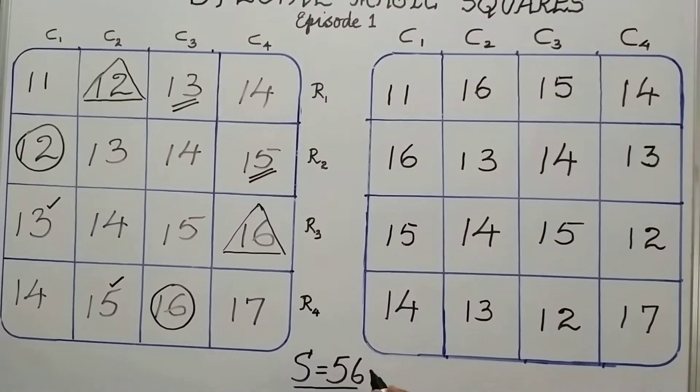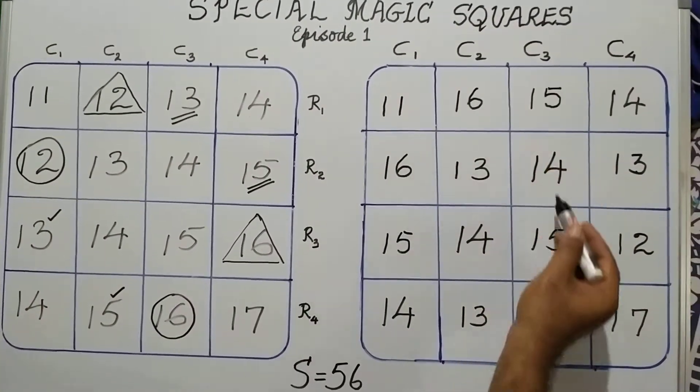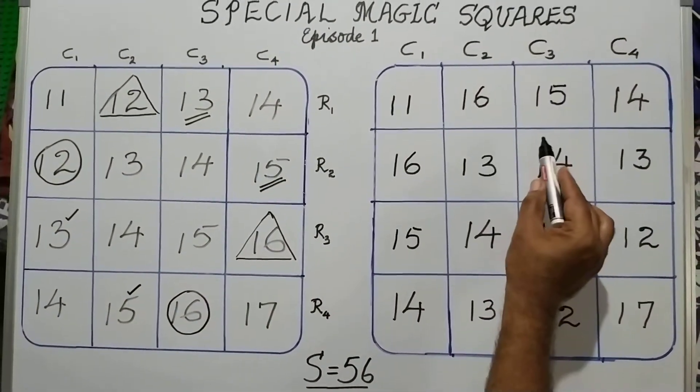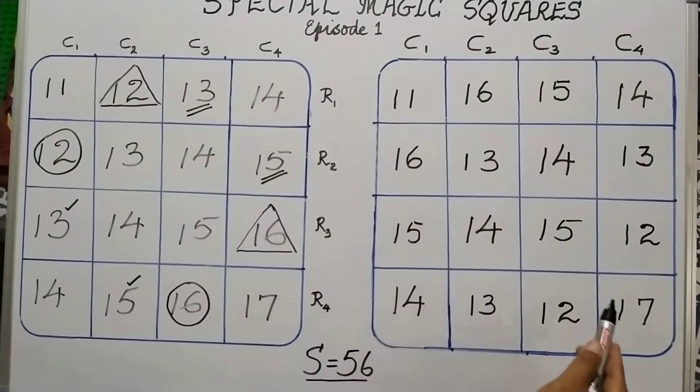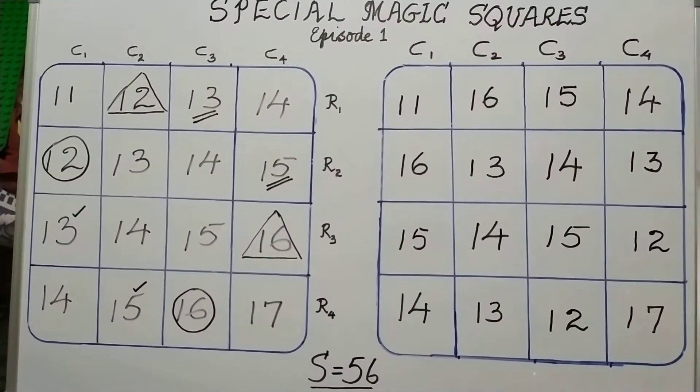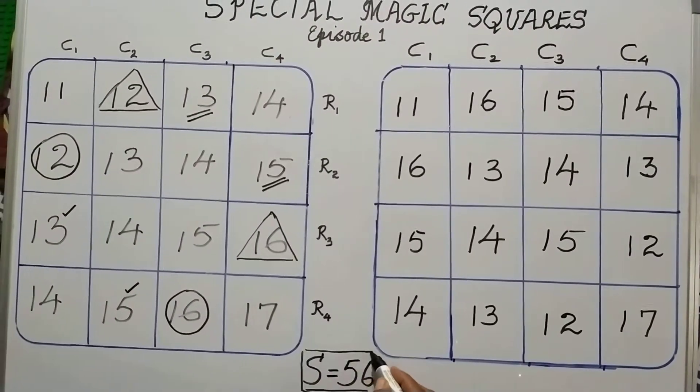And what do we mean by the magic sum? If you add the elements of any column or if you add the elements of any row or if you add the principal diagonal elements or the secondary diagonal elements, the sum, the magic sum will be 56.